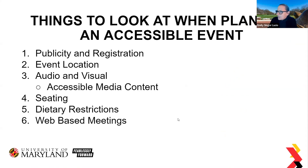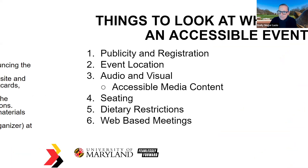Things to look at when planning an accessible event: publicity and registration, event location, audio and visual including accessible media content, seating, dietary restrictions, and web-based seating. We're going to cover a little bit of all of that today.